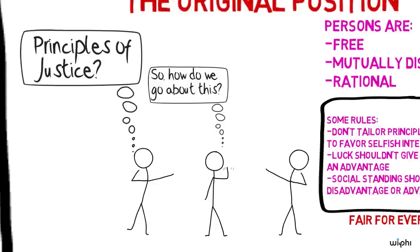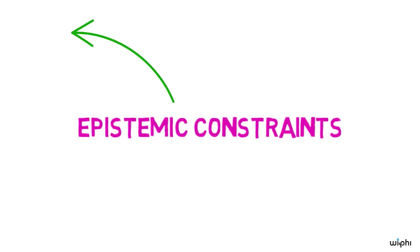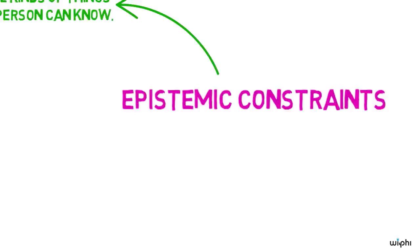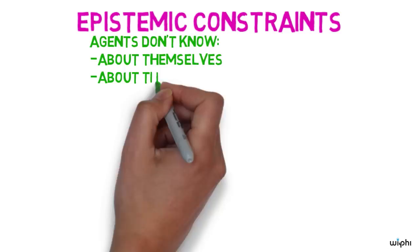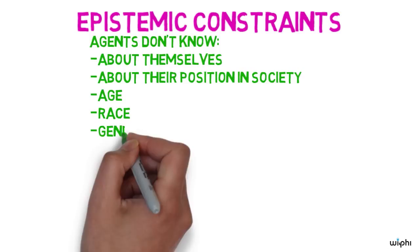A unique feature of Rawls's original position is what we might refer to as the epistemic constraints on the persons in this situation. The word epistemic here simply refers to the kinds of things a person can know. In the original position, the persons, or let's call them agents, they know nothing about themselves or their position in society.